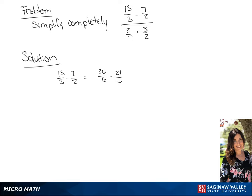Giving us 26 over 6 minus 21 over 6. In the denominator, we have 2 over 7 plus 3 over 2. We will find a common denominator for these two fractions, which will be 14. So the first fraction will be multiplied by 2 over 2 and the second fraction will be multiplied by 7 over 7.